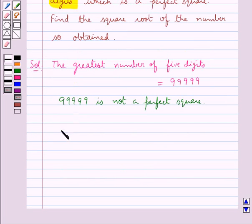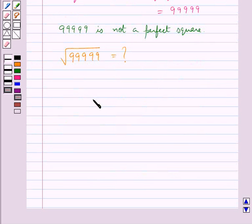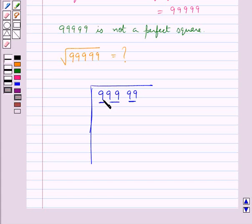We now find out the square root of the number 99999. We make pairs of the digits. Now 3, 3 times is 9. We subtract this 9 from this 9. We get 0. Take down this pair 99. Double this digit of the quotient. That is 6.